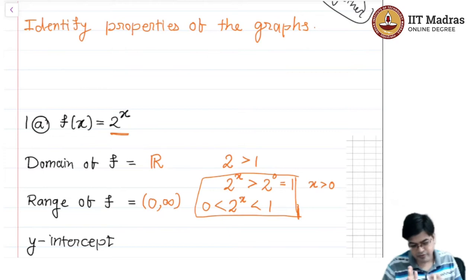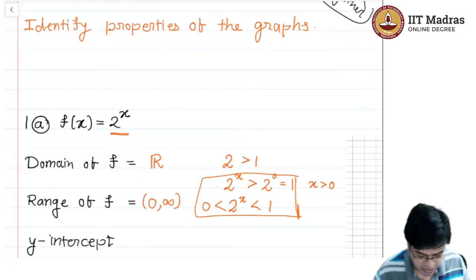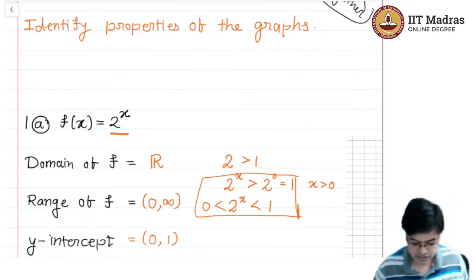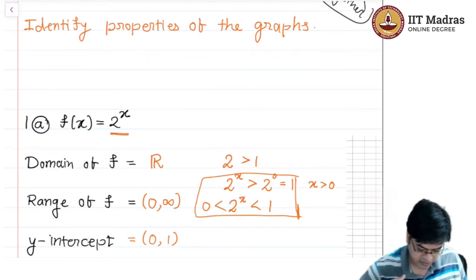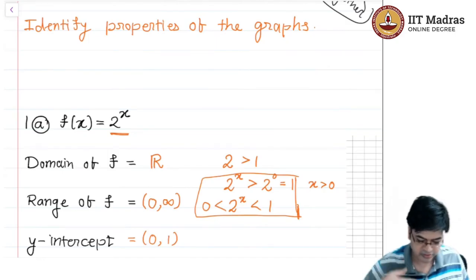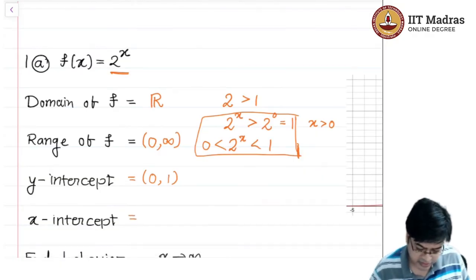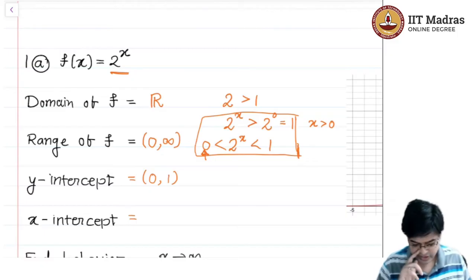With this understanding, you can easily write that the function has a range of (0, ∞). There is something happening at the point (0, 1). What is (0, 1)? It is actually the y-intercept. Something is happening at (0, 1): when x is negative the graph goes below 1, but it never goes below 0.